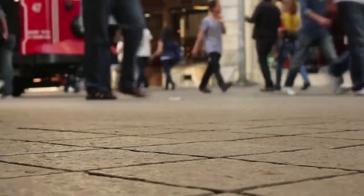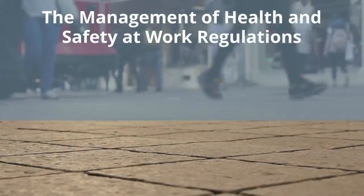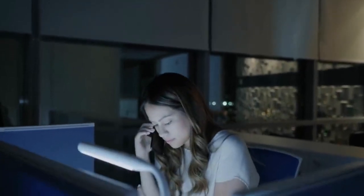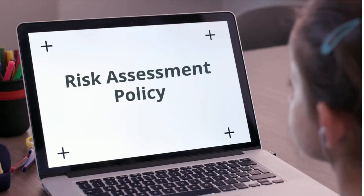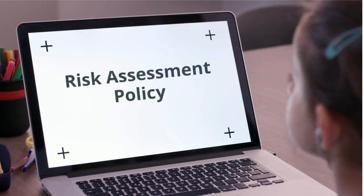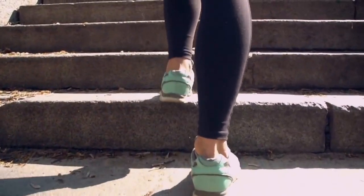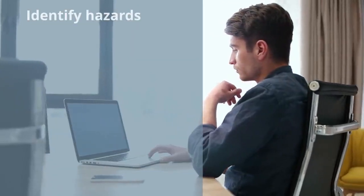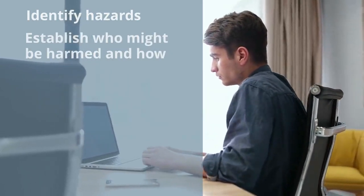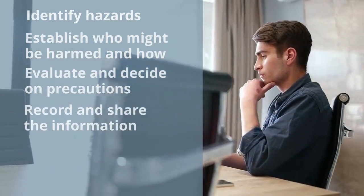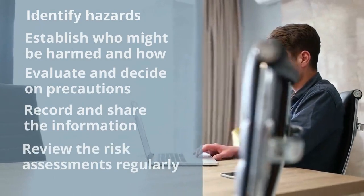Under the Management of Health and Safety at Work Regulations, we are required to carry out suitable and sufficient risk assessments for employees, and they must include lone workers and others. The Council Risk Assessment Procedure can be found on the ORG using the link within this presentation. The steps to follow when carrying out a risk assessment are: identify hazards, establish who might be harmed and how, evaluate and decide on precautions, record and share the information, and review the risk assessments regularly.